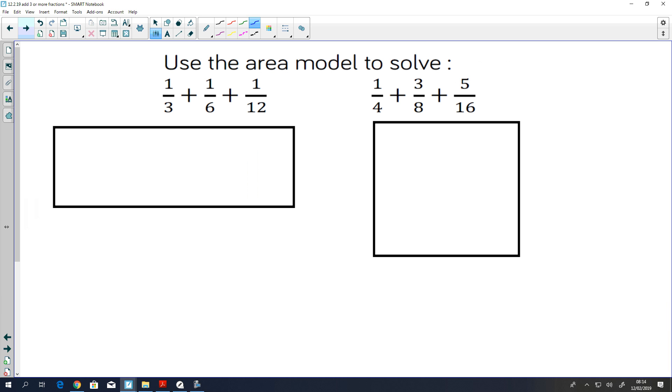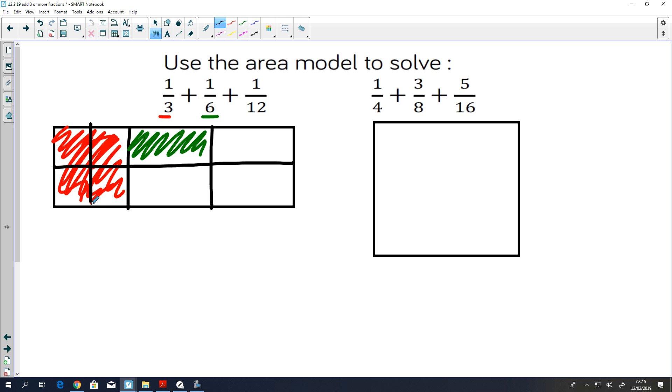You can pause here and try doing your own. I'll show you one. I'm going to split my rectangle into three equal parts and shade in my third. Now I'm going to split it into sixths and add my sixth there. Now I'm going to split it into twelfths by lining down the middle of each of these to make 12 equal parts, and shade in my one twelfth.